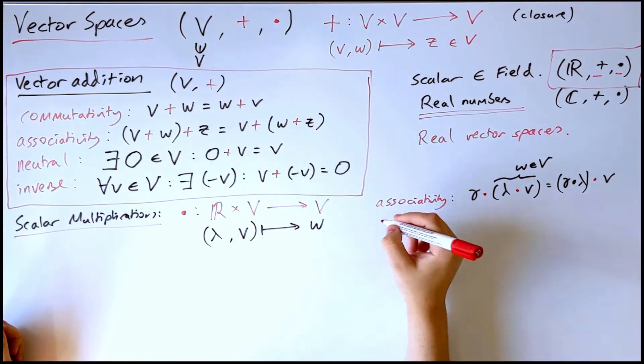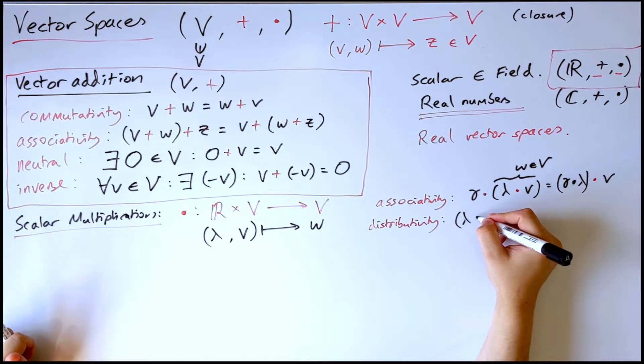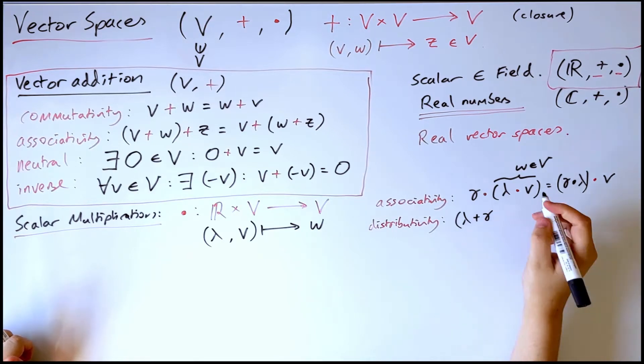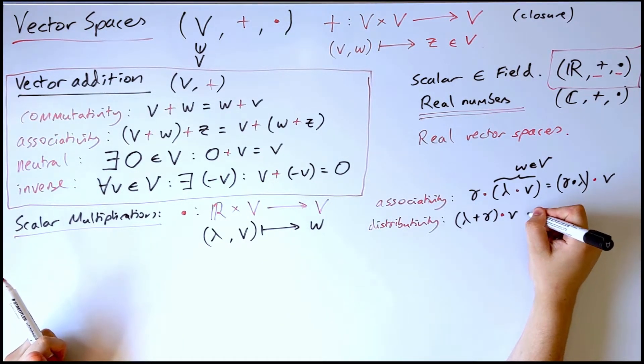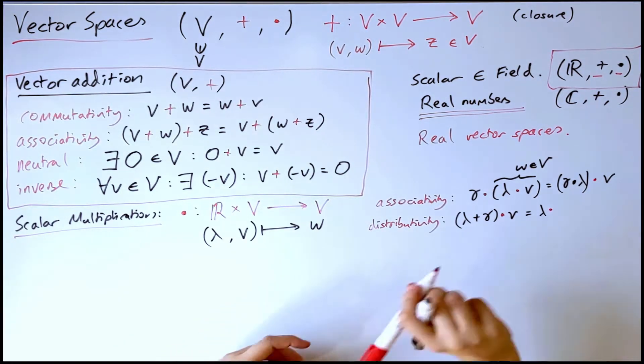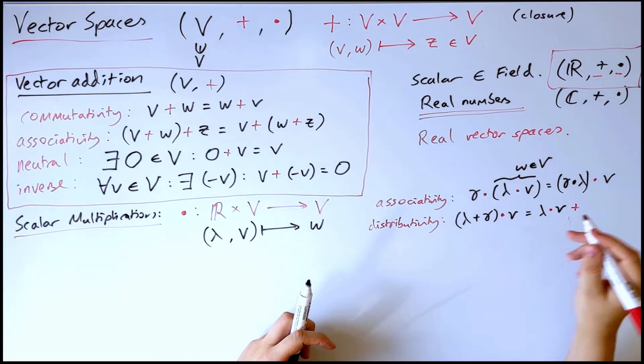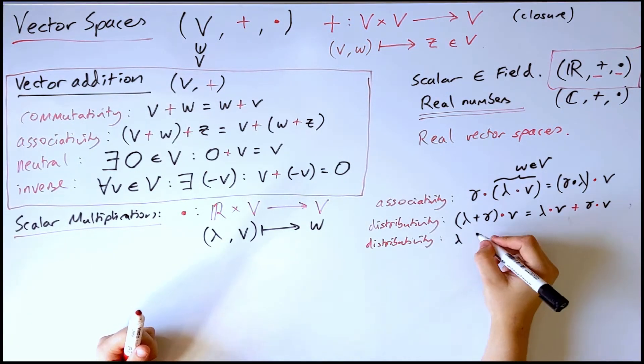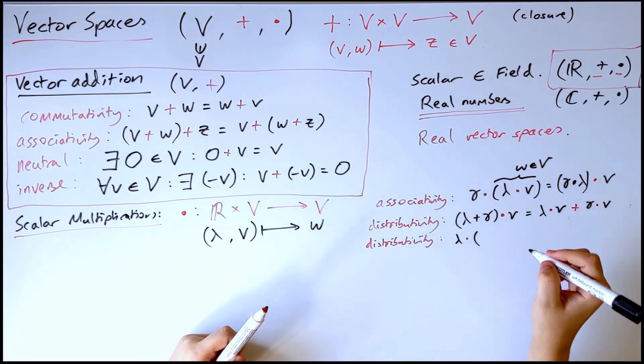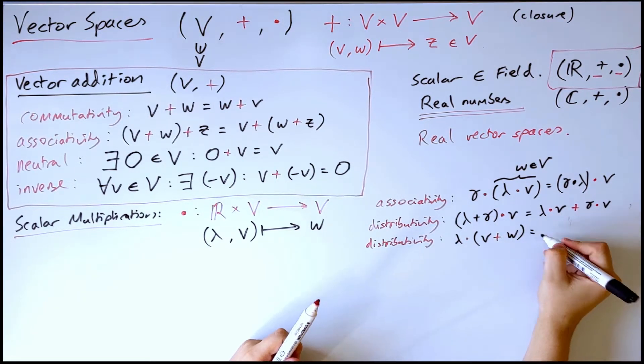So then we have distributivity. So if we begin with two scalars again, and we add them using regular addition on real numbers, then we take that resulting number and act on a vector with scalar multiplication. It's the same thing as doing the scalar multiplication on individual vectors, and then adding them, vector adding them. And then equivalently, we have another distributivity law, which says that if we have any scalar, and we scalar multiply a vector addition. So if we have v vector plus w, we can again split this up as we would expect.